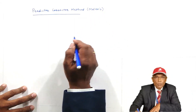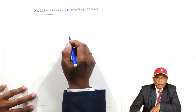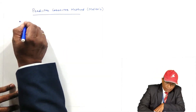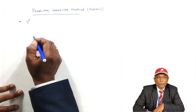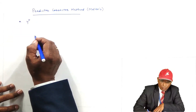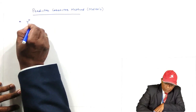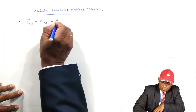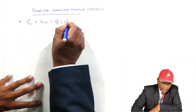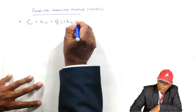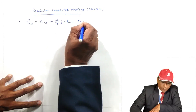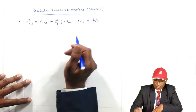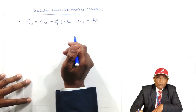We are going to solve problems on the Predictor-Corrector method directly. There are only two important formulas to remember. The first formula is Yp — Yp means the Predictor value of Y. The formula is: Yp_(n+1) = Y_(n-3) + (4h/3) × [2f_(n-2) − f_(n-1) + 2f_n]. I will explain what f_n, f_(n-1), and f_(n-2) are.